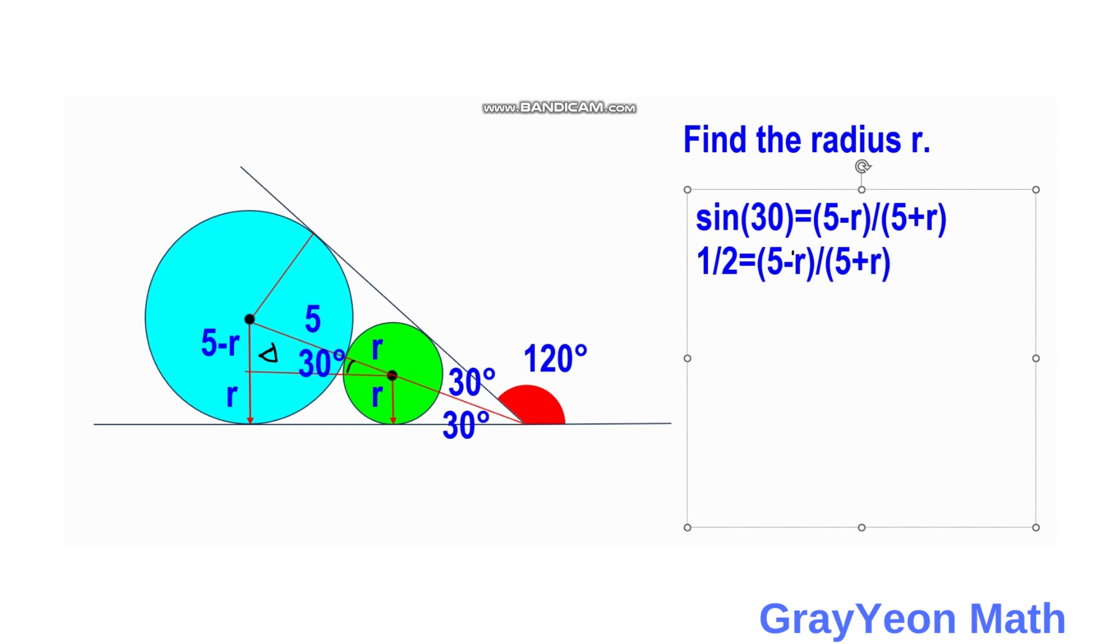If you cross multiply, you have 5 plus R equals 2 times 5 minus R. If you simplify, you have 5 plus R equals 10 minus 2R.